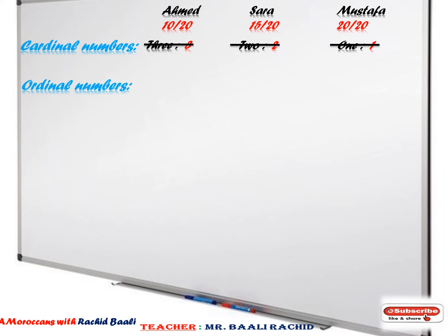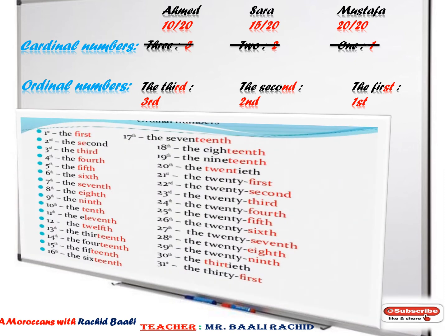So we need what we call ordinal numbers, not cardinal numbers. Using ordinal numbers, we're going to say Mustafa is the 1st — not 1. Sarah is the 2nd — not 2. Ahmed is the 3rd. Clear, guys? And here is a list of ordinal numbers that we usually use in a date.